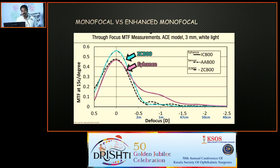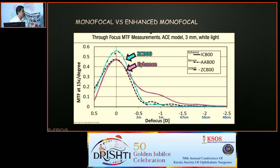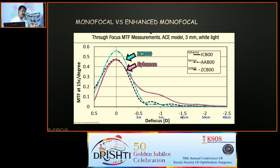In my practice, I use J&J's Eyehance lens, so I can only speak to that experience. This MTF — modulation transfer function — graph compares the Tecnis monofocal with the Eyehance enhanced monofocal. The monofocal peaks at emmetropia for distance vision, then sharply drops at around 2 meters. The enhanced monofocal provides a slight extension, coming up to minus 1.5 defocus — meaning up to about 67 centimeters — with only a negligible compromise in distance vision. This intermediate range is useful; for example, kitchen work distance is typically around 60 centimeters.